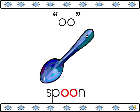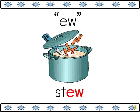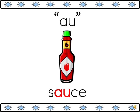The OO makes the O sound you hear in spoon. The OO also makes the U sound you hear in book. EW makes the O sound you hear in stew. The AU makes the AH sound you hear in sauce.